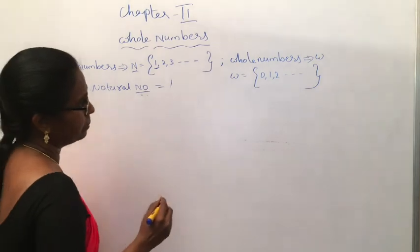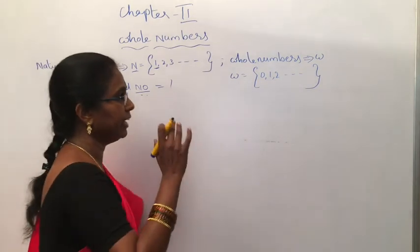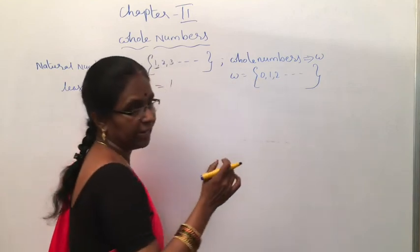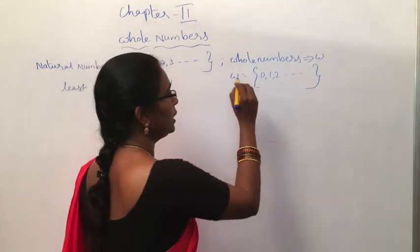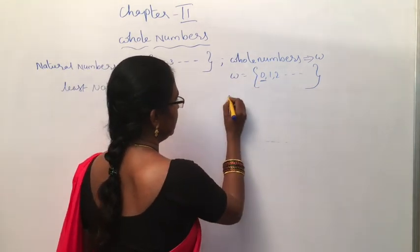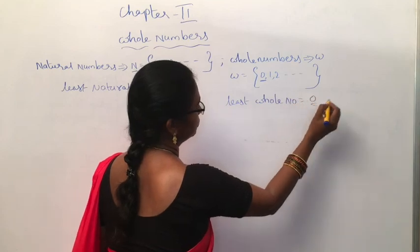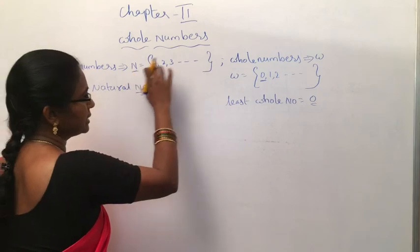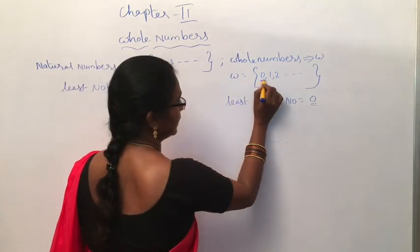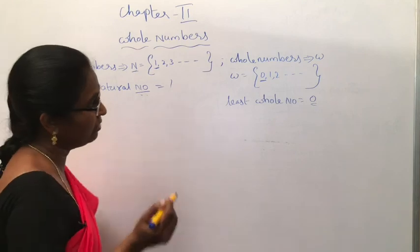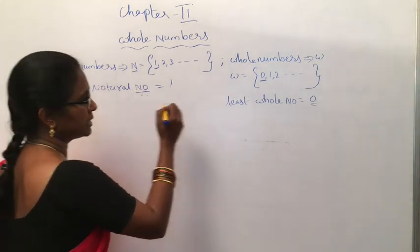Now whole numbers — whole numbers also include natural numbers, but when we say the set of whole numbers it includes 0. Natural numbers plus 0 equals whole numbers. So the whole numbers set starts with 0, and the least whole number is 0. All natural numbers are whole numbers, but all whole numbers are not natural numbers because 0 is extra. Except 0, all whole numbers are natural numbers.